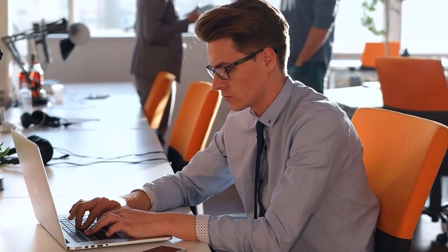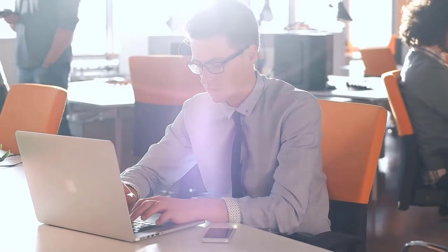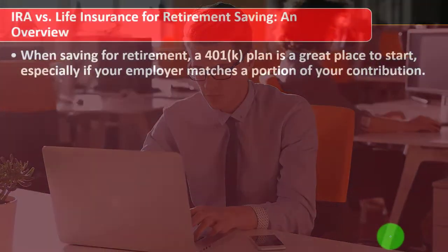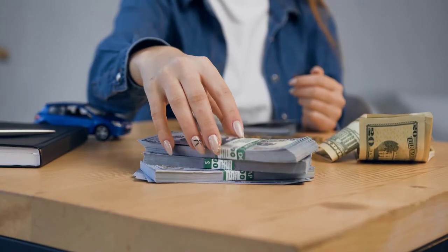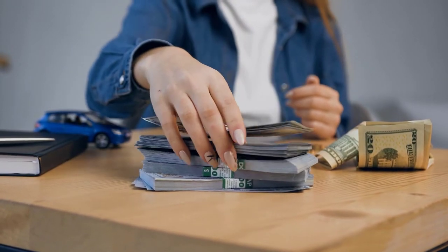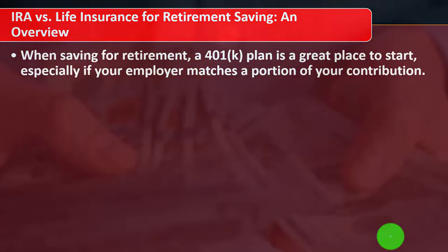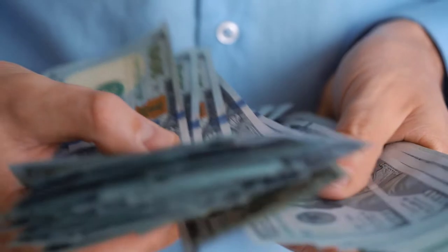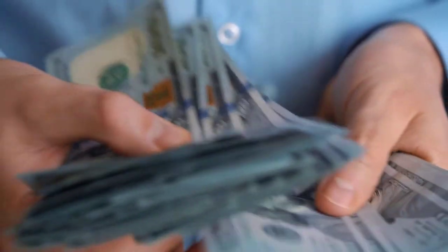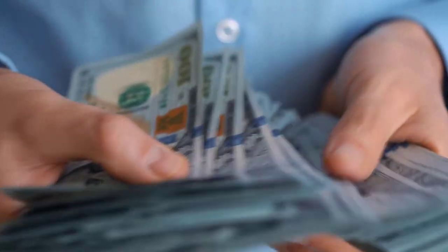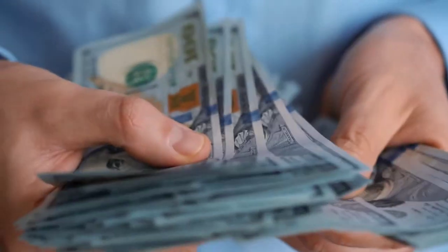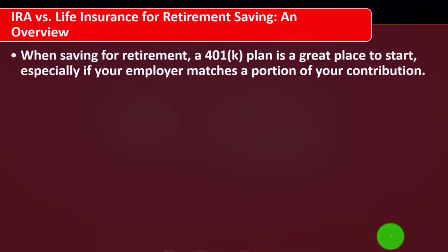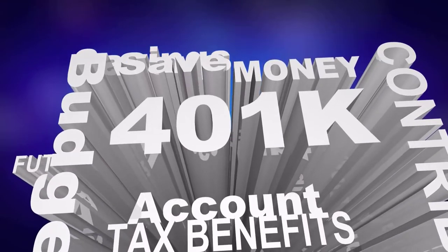When saving for retirement, a 401k plan is a great place to start, especially if your employer matches a portion of your contribution. If your employer gives you a 401k, it usually has a pretty high maximum contribution amount. They might match your contributions, which is huge, and you get a tax benefit because you might not be taxed on the amount you put in, and the income generated — dividends and interest — is typically not taxed until you pull it out at retirement.